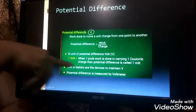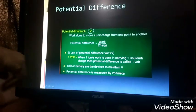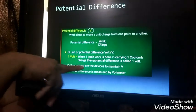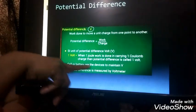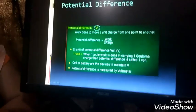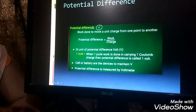Now to maintain this potential difference we use either cell or battery, and it is measured using the voltmeter.